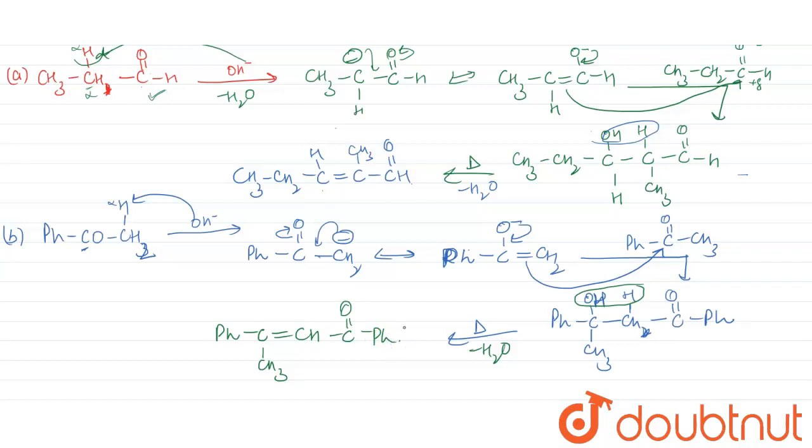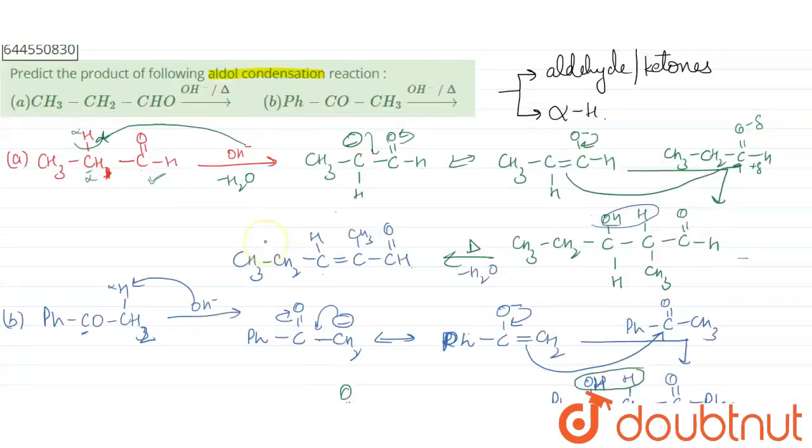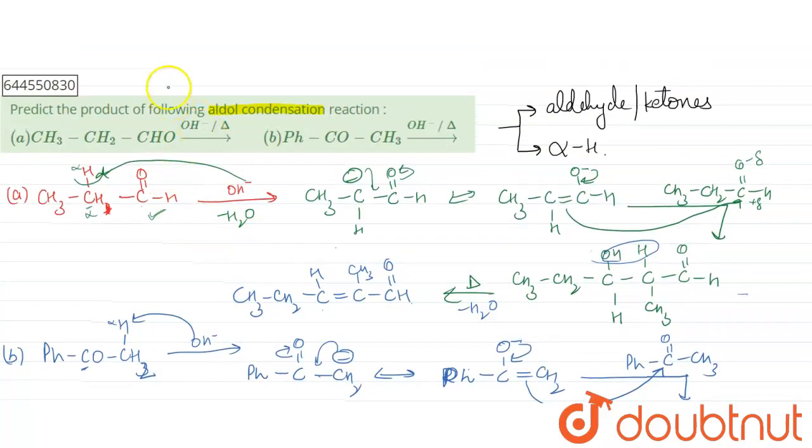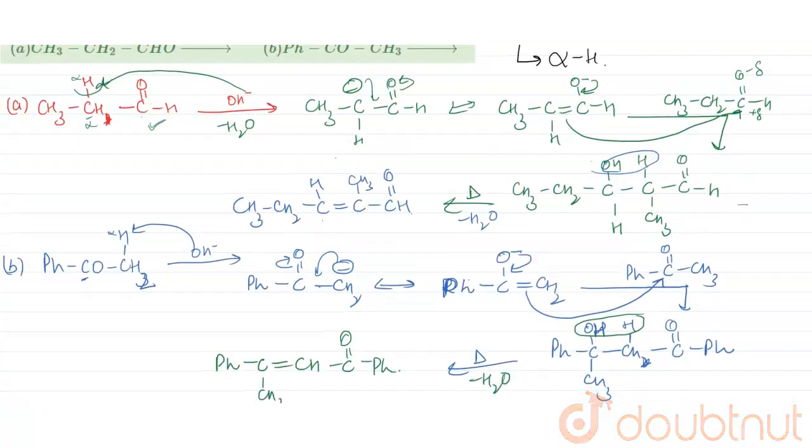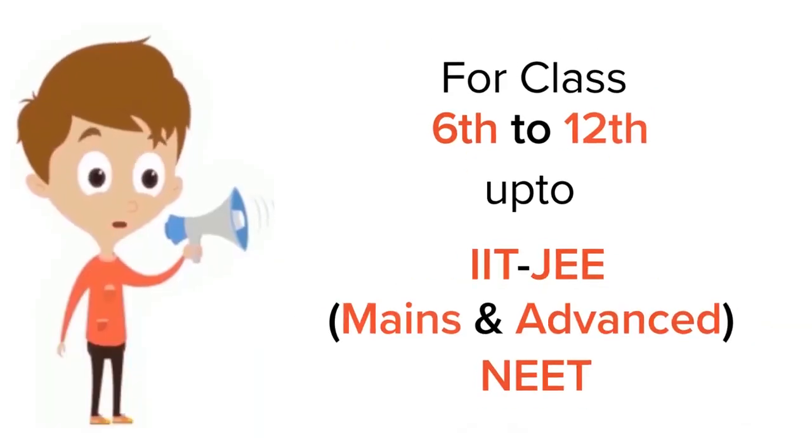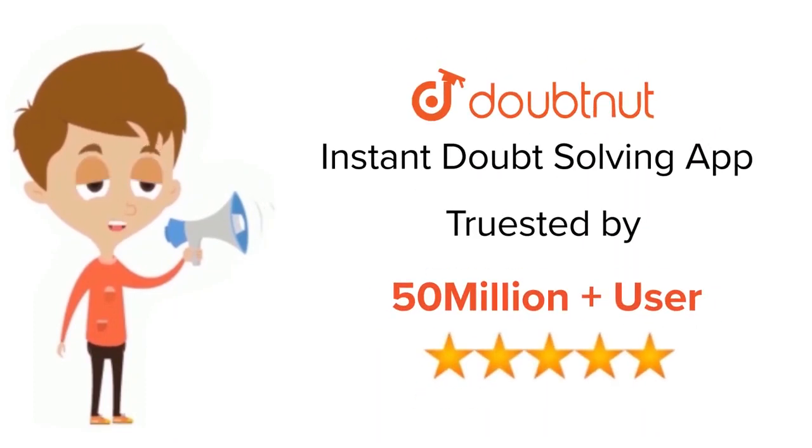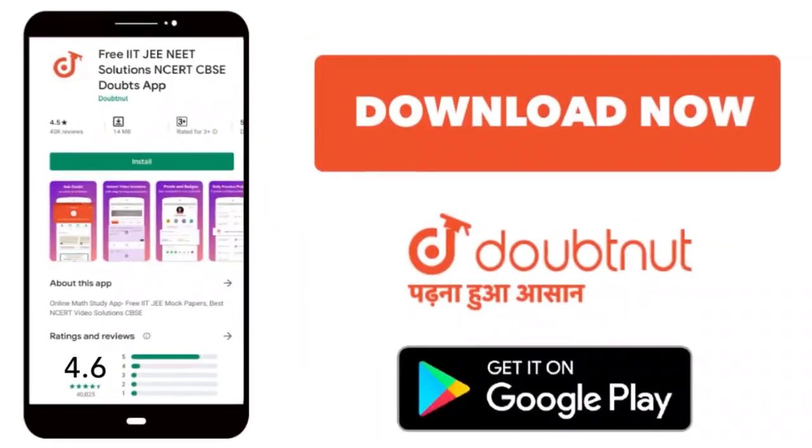Guys, I hope you understand the question. Thank you. For class 6-12, IIT-JEE and NEET level, trusted by more than 5 crore students. Download Doubtnet app today.